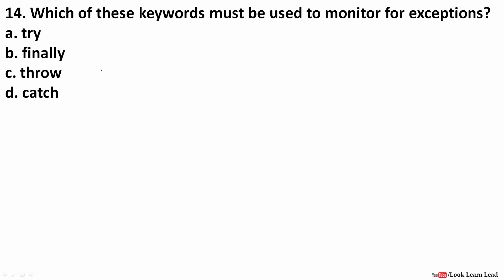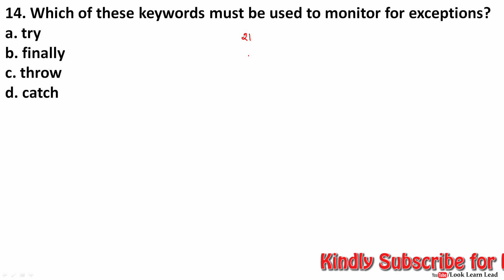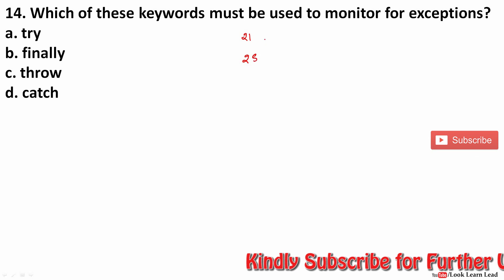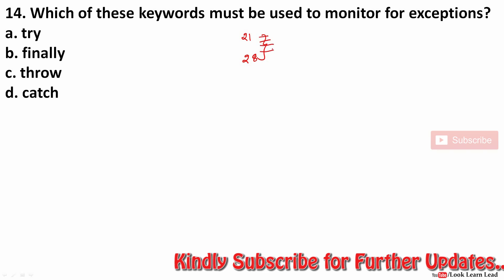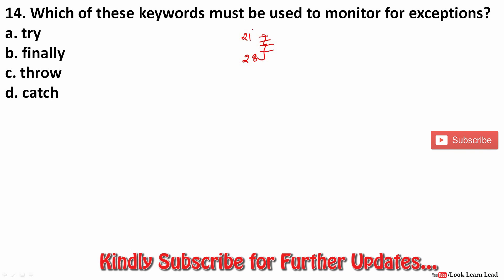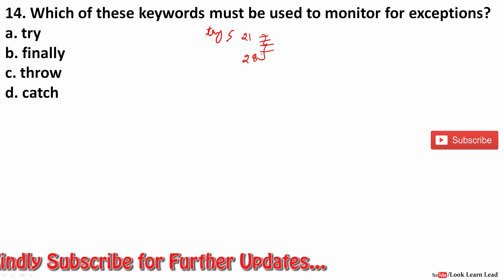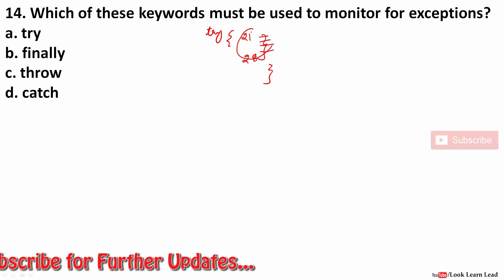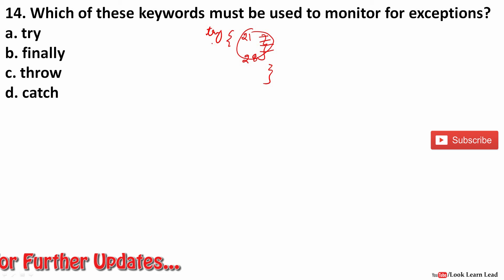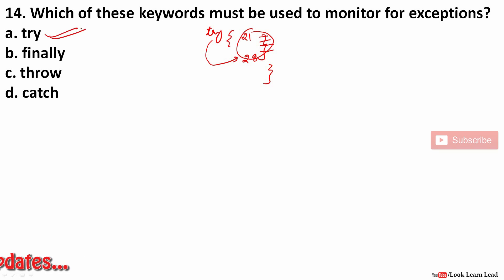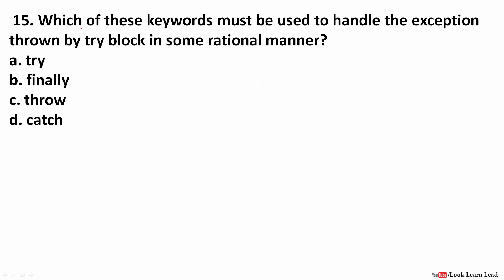Which keyword must be used for monitoring exceptions? If we know that a certain block of code — say lines 21 to 28 — will raise an exception, we place it inside a try block. The try keyword is the answer for monitoring exceptions.